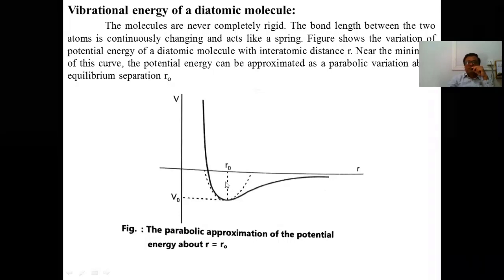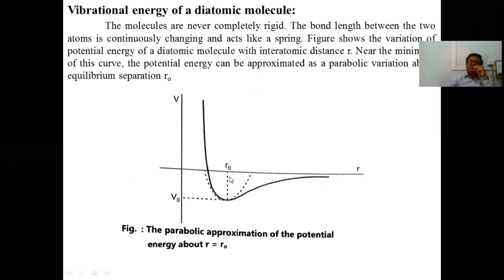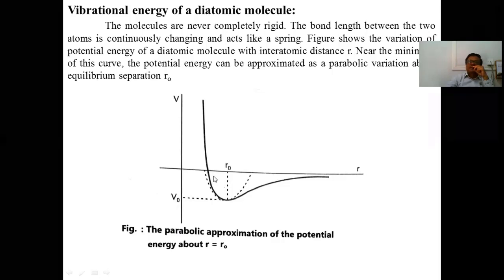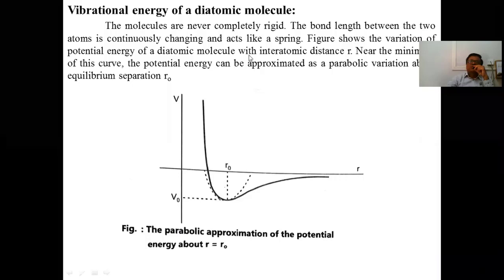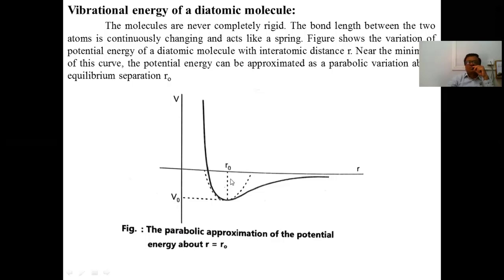The diatomic molecule vibrates continuously. Therefore, due to the vibration, the molecular distance may become greater than r0 or may become less than r0. Around r0, the potential energy varies in a parabolic manner, as shown by the dotted line — this is the parabolic variation of the potential energy.